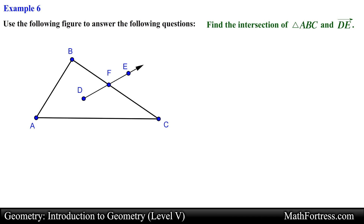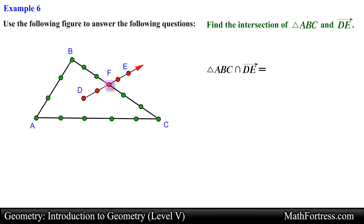Let's end the video with the final example: find the intersection of triangle ABC and ray DE. Using set notation this translates to triangle ABC intersection ray DE. The set of all points located on triangle ABC are represented here, and the set of all points located on ray DE are represented here. We are looking for the intersection of these two sets of points. Notice that both sets intersect at a common point — in this case they intersect at point F. So the intersection of triangle ABC and ray DE is the set containing point F.